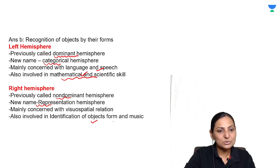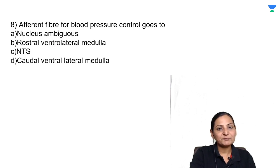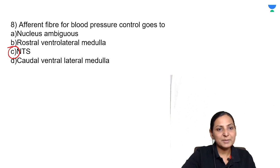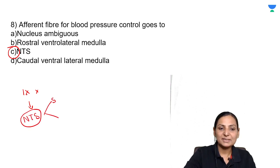The afferent fibers for blood pressure control goes to nucleus ambiguus, rostral ventrolateral medulla, nucleus tractus solitarius, or caudal ventrolateral medulla? The correct answer is nucleus tractus solitarius (NTS). All the fibers like the fibers from the 9th and the 10th are going to first terminate on the nucleus tractus solitarius which will be responsible to modify the activity of the sympathetics and the parasympathetics depending upon whether you have to decrease or increase the blood pressure.